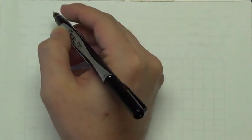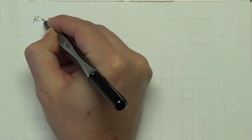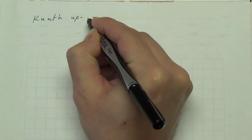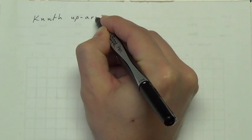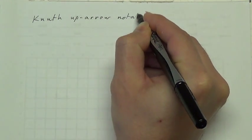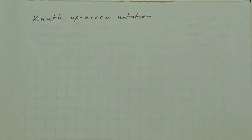Good morning. As promised, we will continue our discussion on big numbers today. What I want to talk about is the Knuth up-arrow notation. It's a way of recording very large numbers.